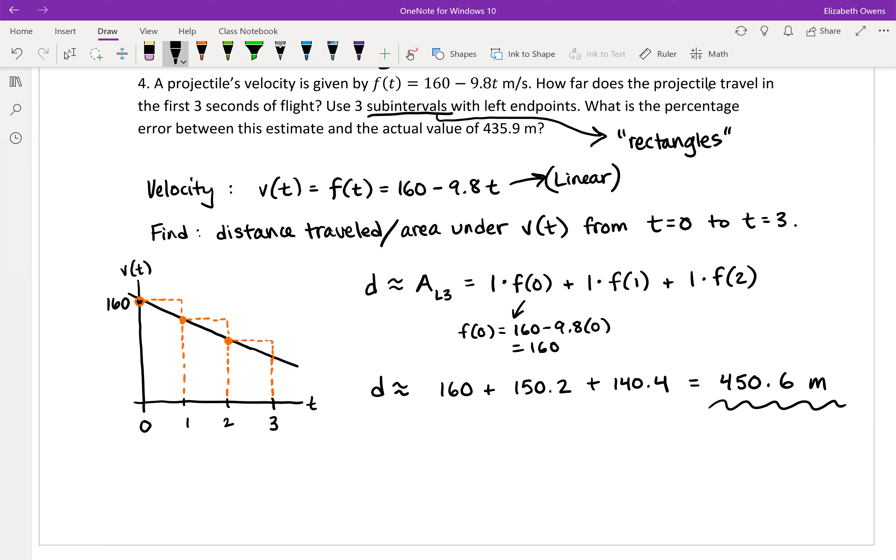Okay. So yeah, that is our estimation as for how far this projectile travels in three seconds. Now that's all well and good, but let's check out what the percentage error is between this estimate. And then we're given the actual value of 435.9 meters. So this is how far the thing actually went. This is how far we're estimating that it went based on our rectangle model here.